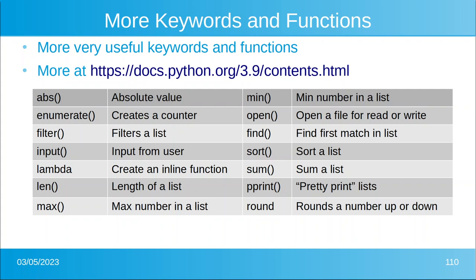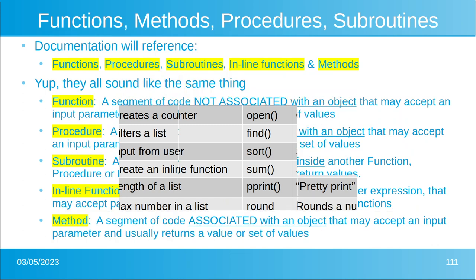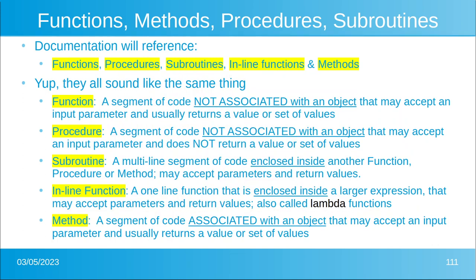Let's dive right in — more of these vocabulary words: functions, methods, procedures, and subroutines. They all sound like the same thing, but the documentation will reference all of them. A function is a segment of code that is not part of an object that may or may not accept an input parameter and usually returns a value. A procedure is basically the same thing as a function but does not return a value — usually used to set up equipment or do some process that doesn't require an output. A subroutine is a multi-line segment of code that is inside another function.